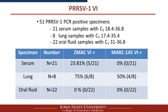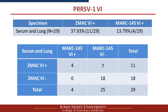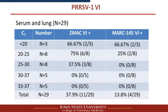For PRRS-1, we tested 51 PCR-positive samples, including 21 serum, 8 lung, and 22 oral fluid samples with different CT ranges. Again, the oral fluid samples had high CTs. Similarly, the highest success rate was in ZMAC cells compared to MARC-145, and oral fluid yielded zero positives. Combining serum and lung for PRRS-1, about 38% positive in ZMAC and 14% positive in MARC-145. Of the 11 positive in ZMAC, only 4 were also positive in MARC-145. All 4 positive in MARC-145 were also positive in ZMAC. Again, CT less than 30 performs better in ZMAC; CT higher than 30 is poor in either cell line.